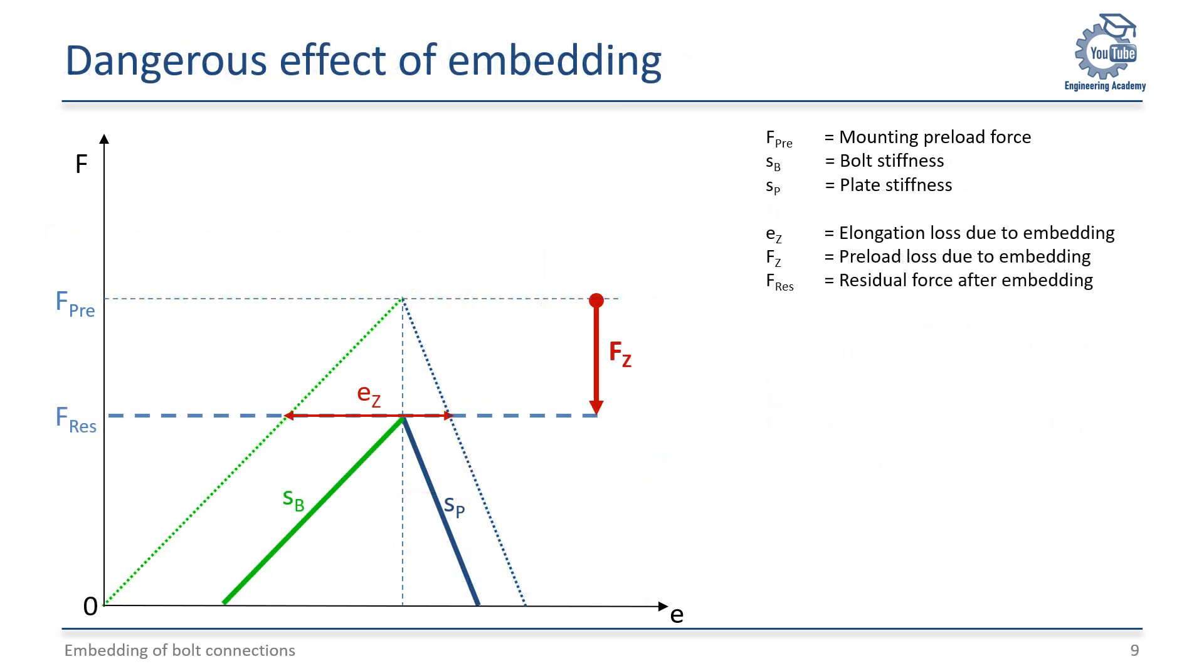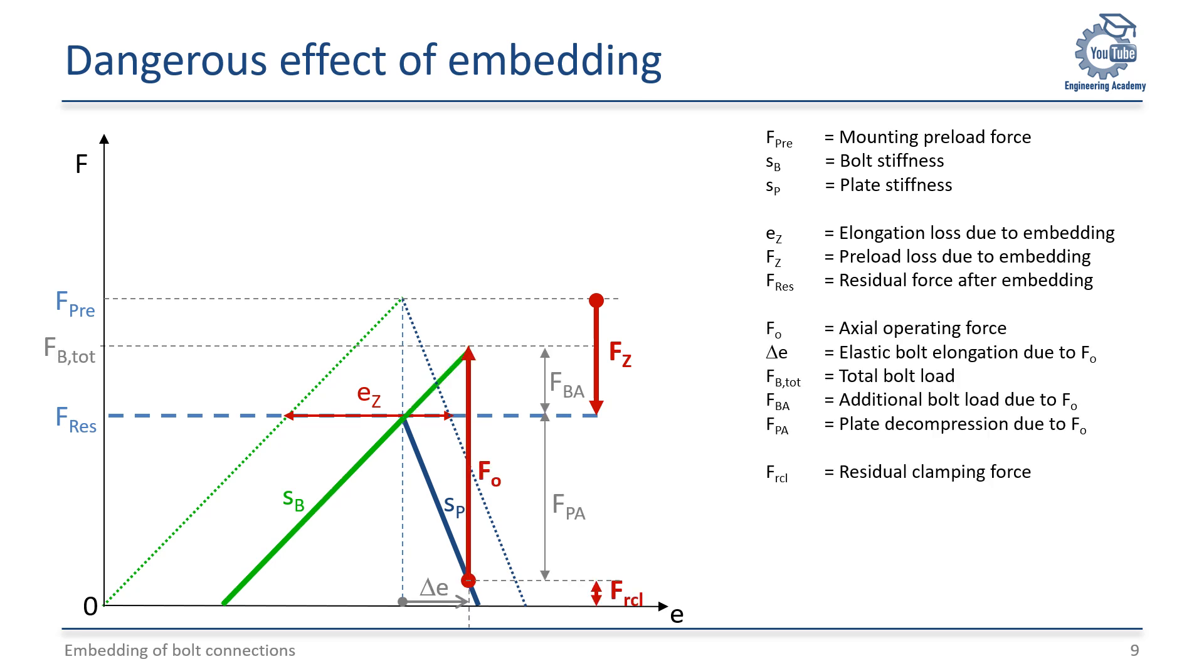If embedding occurs, the embedding amount EZ causes the preload loss FZ, shown in red, reducing the assembly preload force FPRE to the lower residual preload force after embedding FRES. Since all stiffness values remain unchanged, the same operational load FO generates the same preload reduction FPA as shown before.